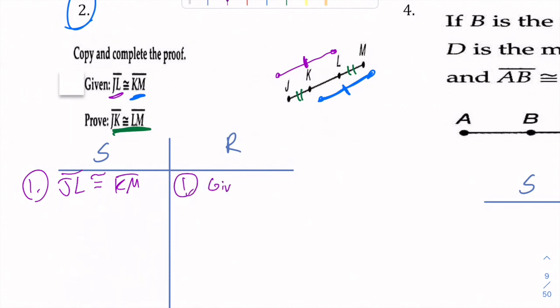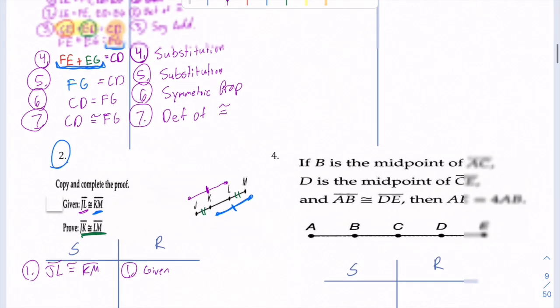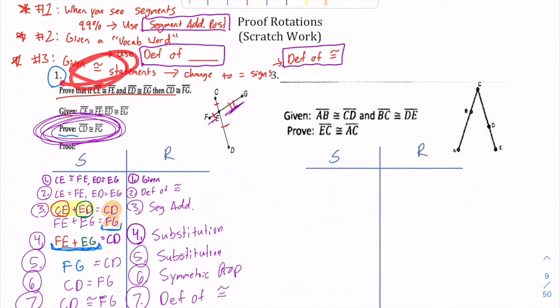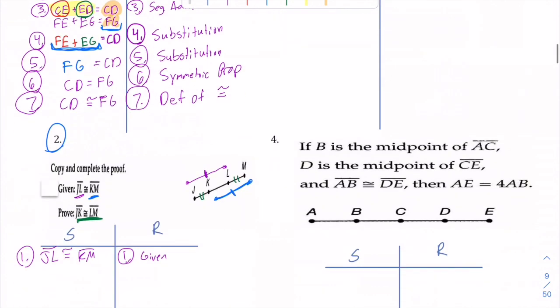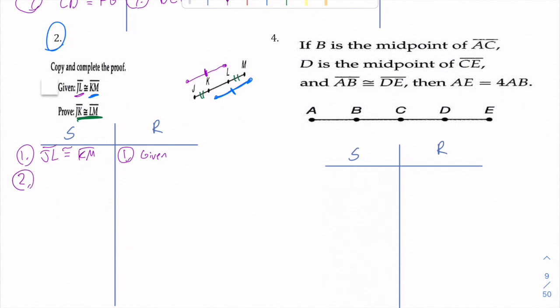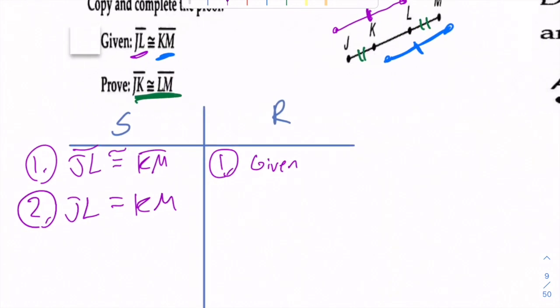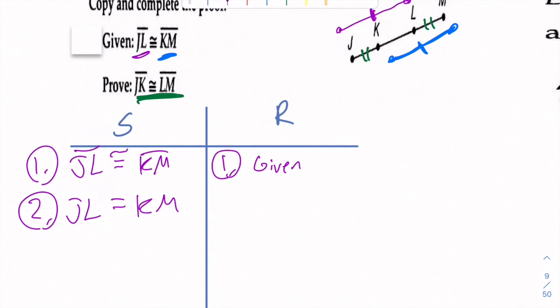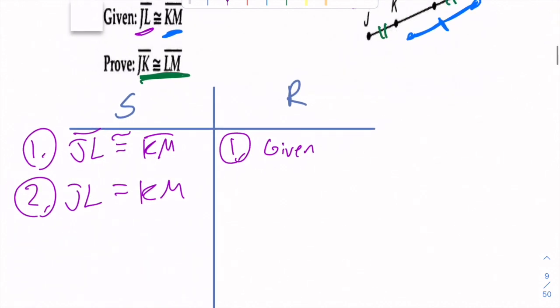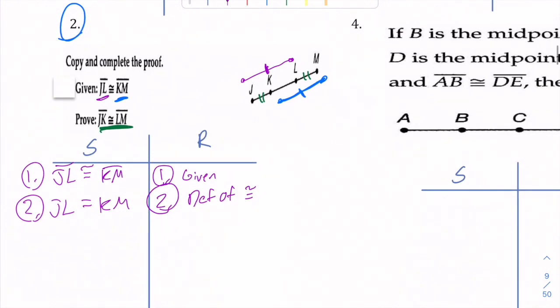So let me show you what that's going to look like here. JL is congruent to KM. That's given three points. What's another three point? What happens when you see a congruent sign? Definition of congruence. So step two. Let's put an equal sign. Remember, whether you put it there or if you don't, it's assumed to be a segment. This here is definition of congruence. So that was cool. Why we got that.